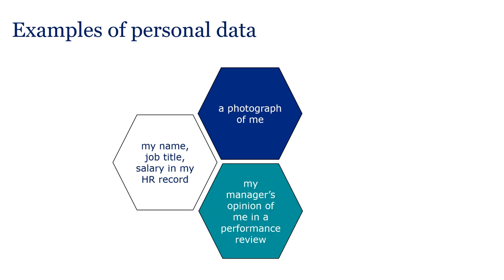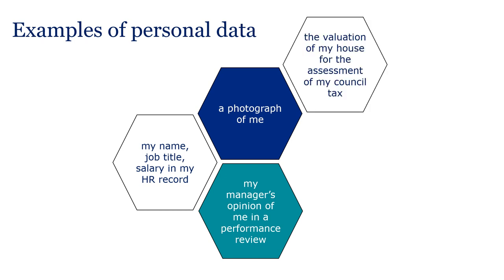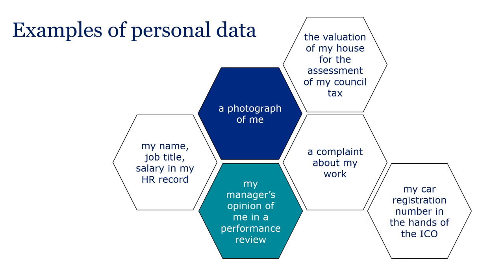Other examples include my manager's opinion of me in a performance review, the valuation of my house for the assessment of my council tax, and a complaint about my work. Note this will be my personal data because it relates to me, but it will also be the personal data of the complainant. The last example is my car registration number in the hands of the ICO. There is no means of knowing I own a particular car by looking at the registration number alone. However, because the ICO can look up a registration number and see that the car is mine, this number becomes my personal data in the hands of the controller, who has used other information it has access to to identify who an individual is.